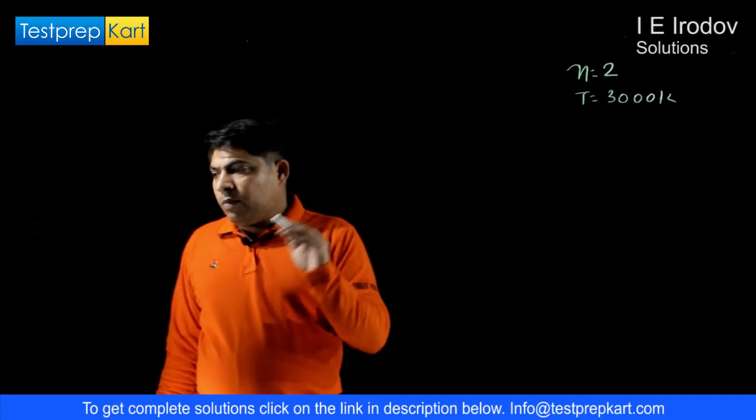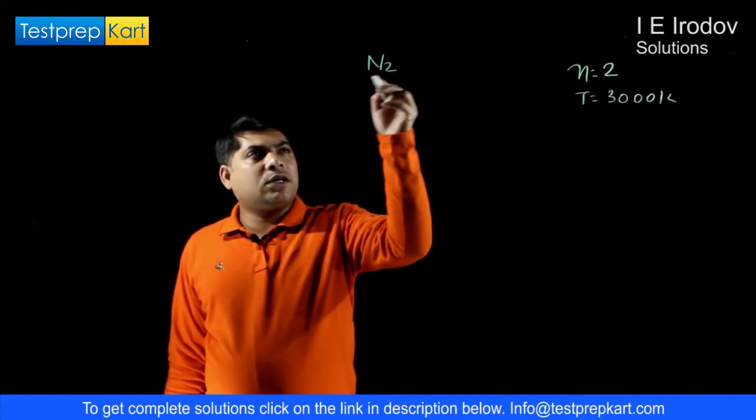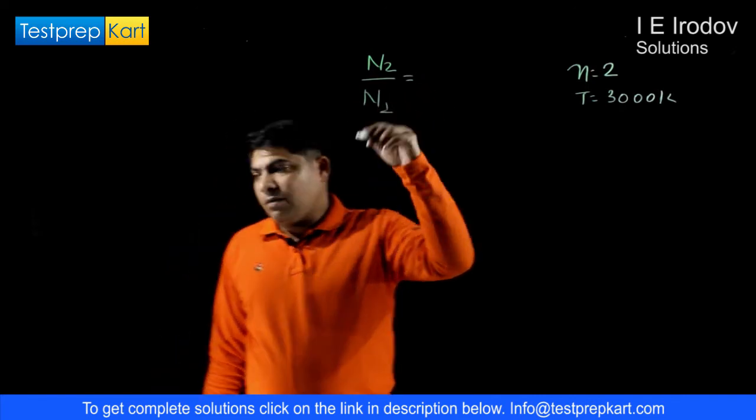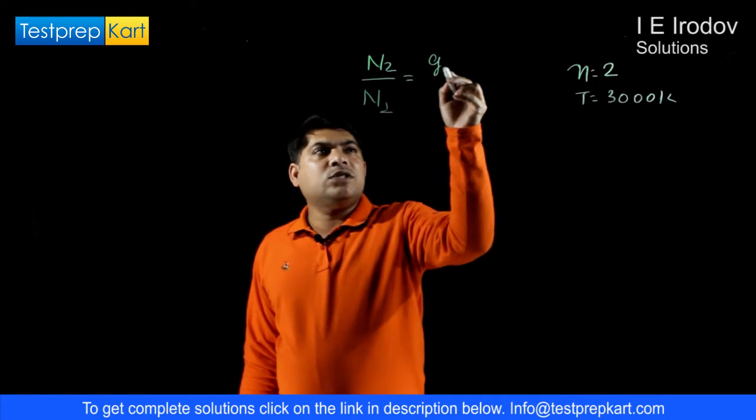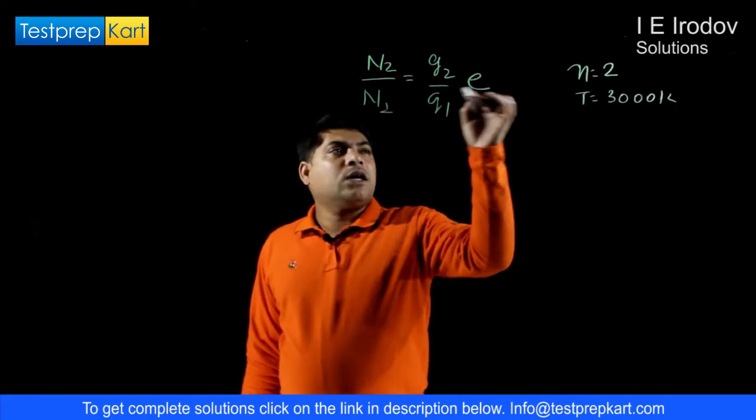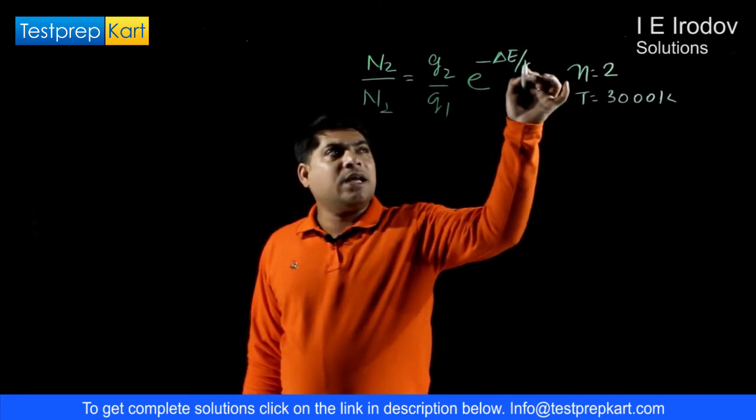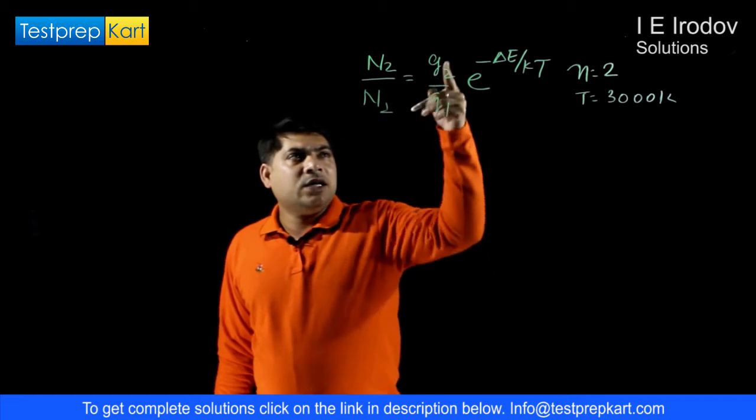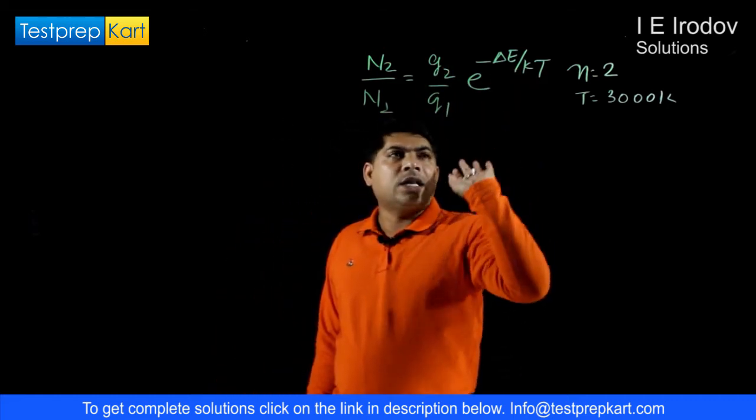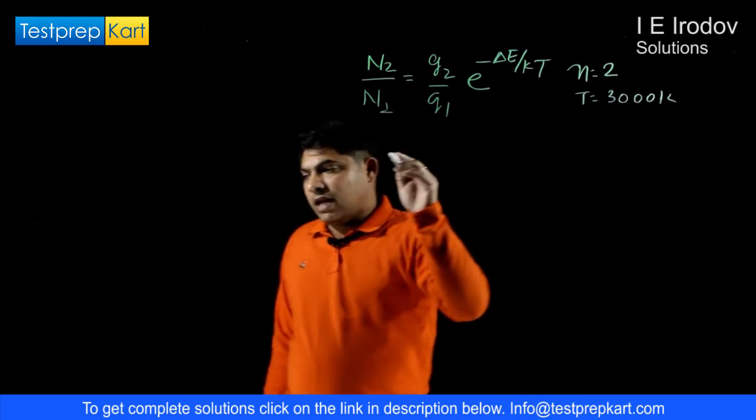The Boltzmann formula for the ratio of number of hydrogen or fraction available is N2 over N1 equals G2 over G1 times e to the power minus delta E over kT, in different quantum numbers. Where G1 and G2 are degeneracies, delta E is energy difference, k is Boltzmann constant, and T is temperature.